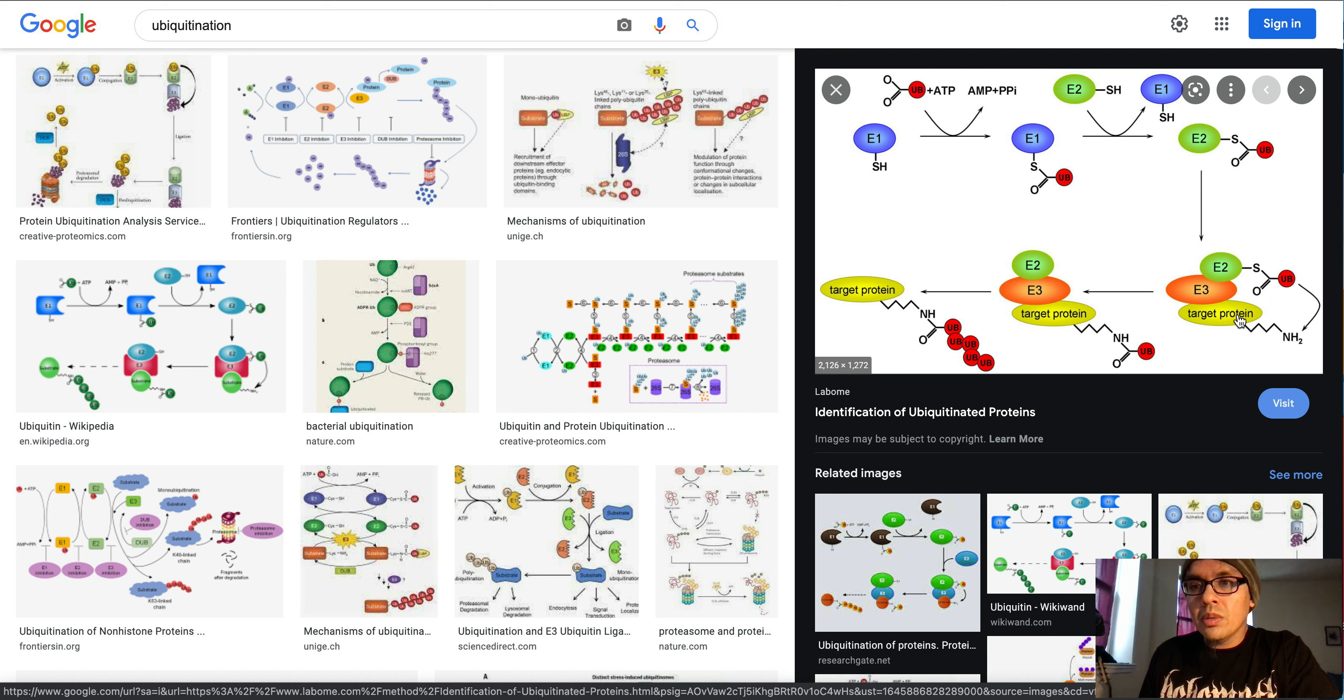...the E2 enzyme is finally attached to a target protein. The target protein is attached via this lysine residue through this NH bond, called an isopeptide bond. This isopeptide bond is then representative of a mono-ubiquitinated protein. Then this occurs many times over until finally the protein is multi-ubiquitinated. This cycle happens over and over again, and then this is what's finally tagged for degradation.